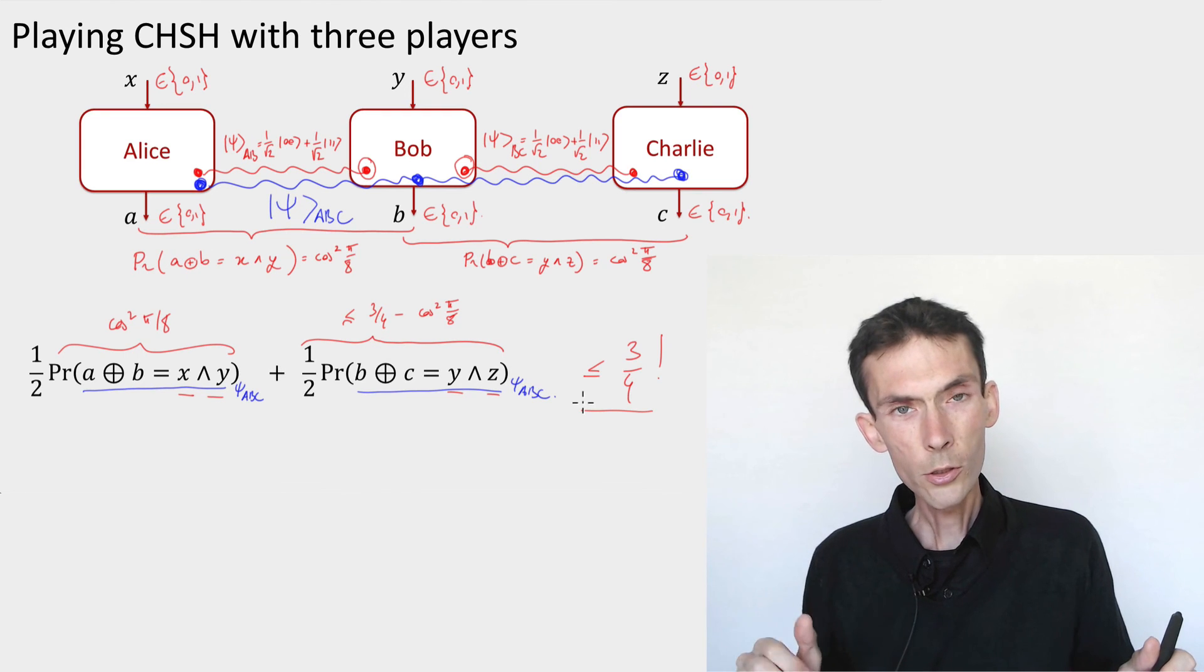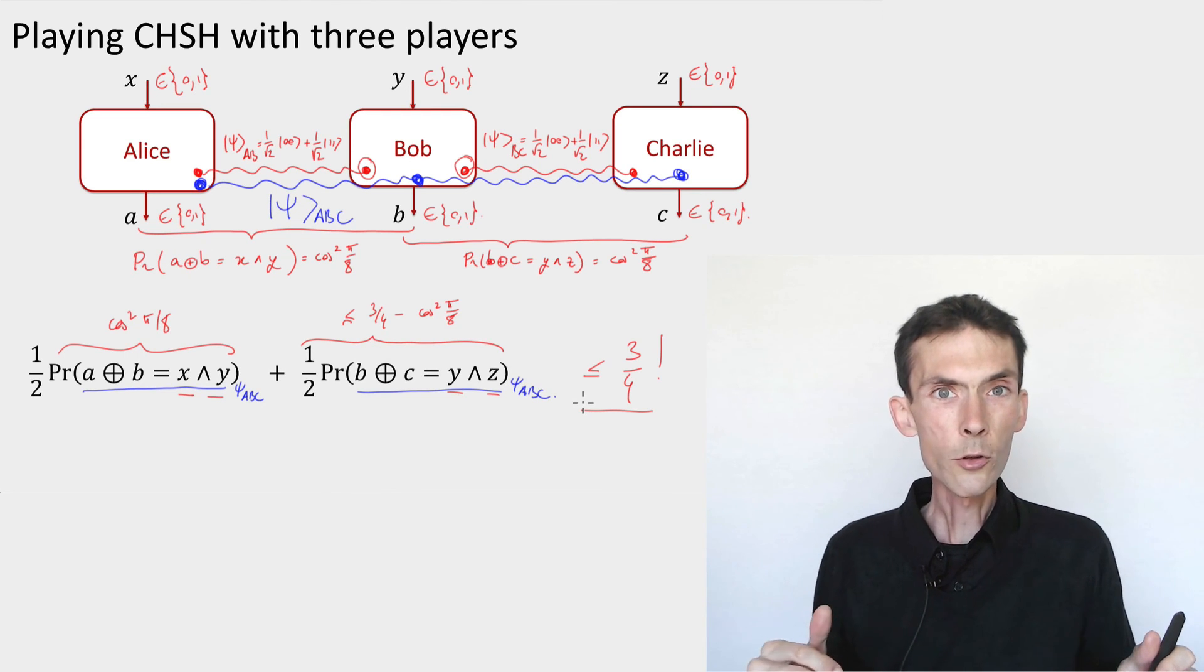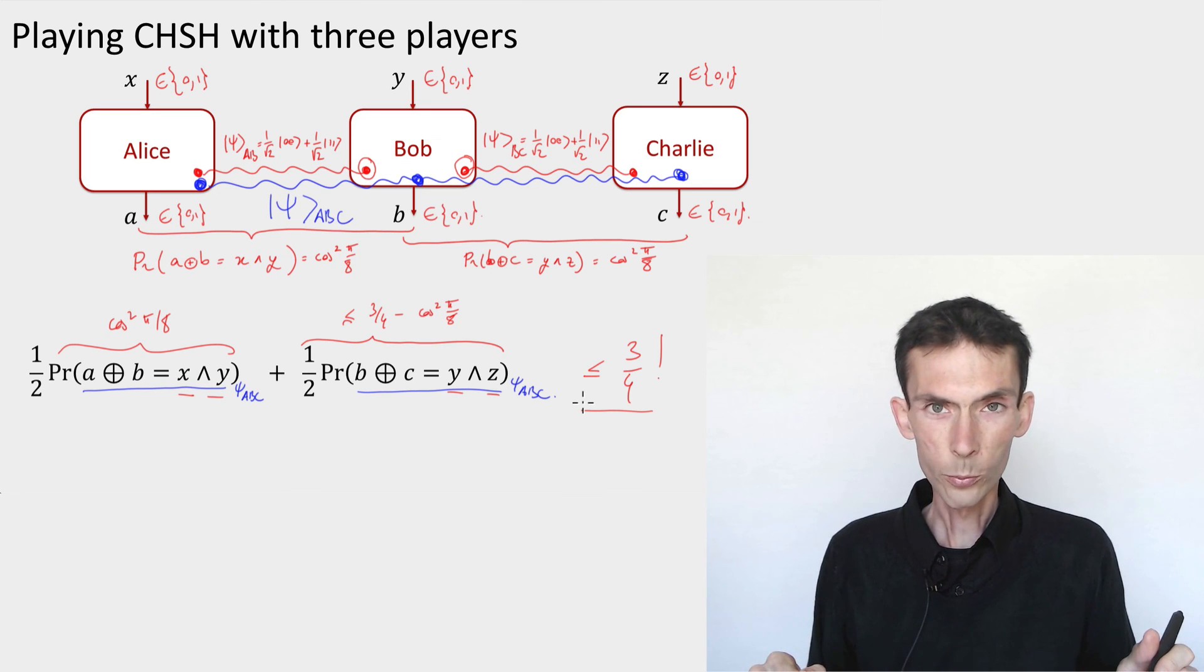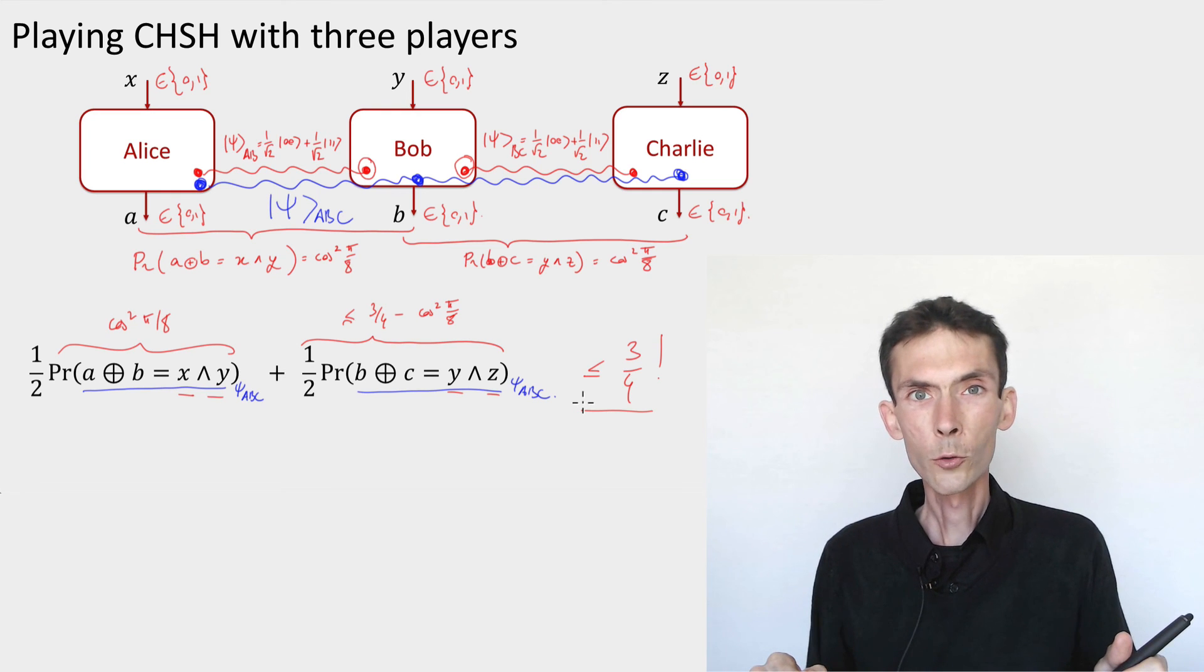So this is another expression of monogamy. It's expressed at the level of correlations rather than at the level of the entangled state or the Schmidt coefficients that we saw in the previous module. And it's the kind of form that's going to be the most useful for cryptography.